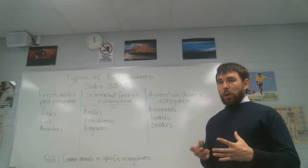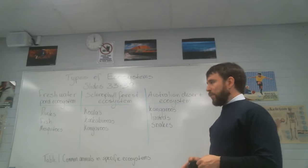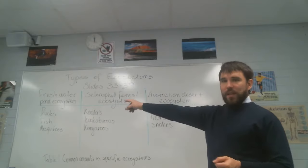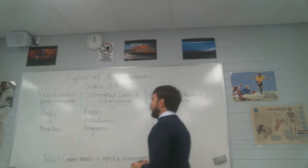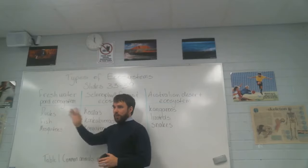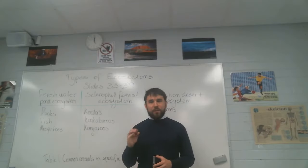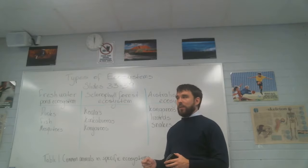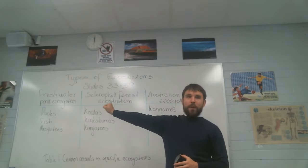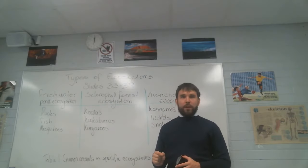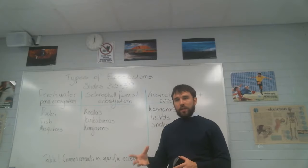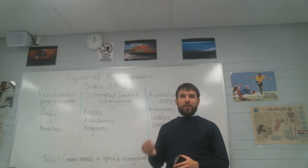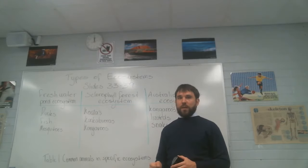Looking at the left-hand side — the freshwater pond ecosystem — we have ducks, fish, and mosquitoes as our three examples, each with specific adaptations to survive in that community. Ducks are found in almost all freshwater ecosystems; they might be a slightly different species in different locations, but we will almost always find them.